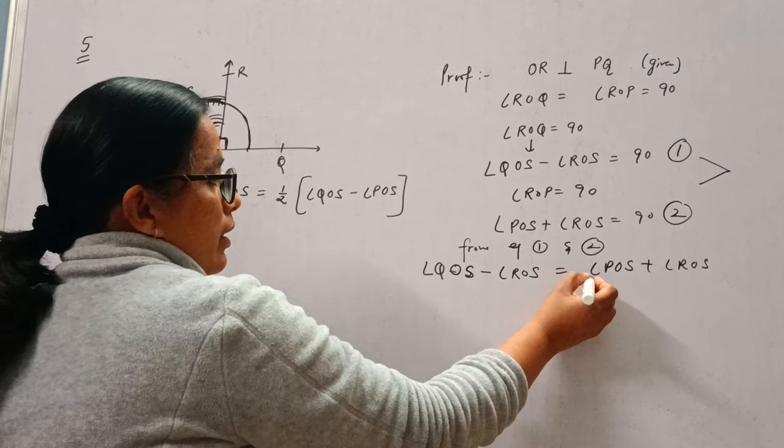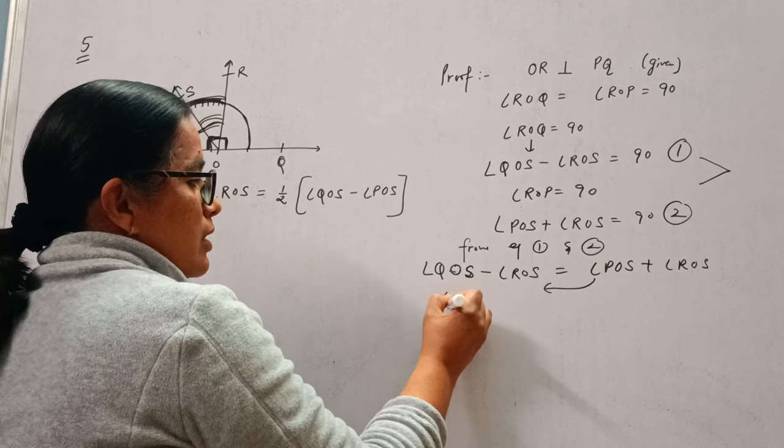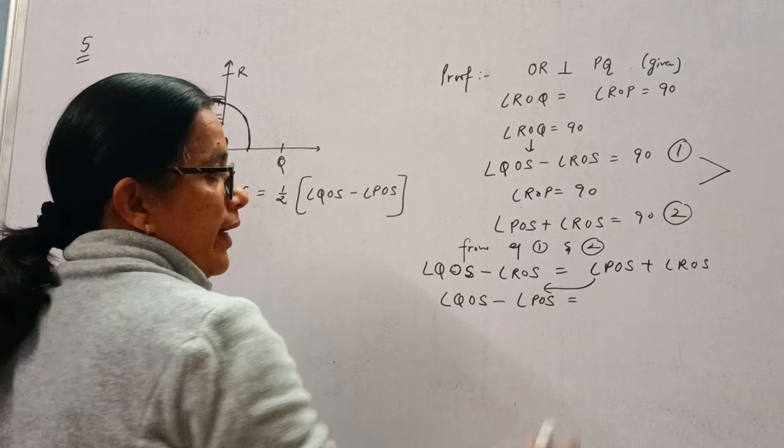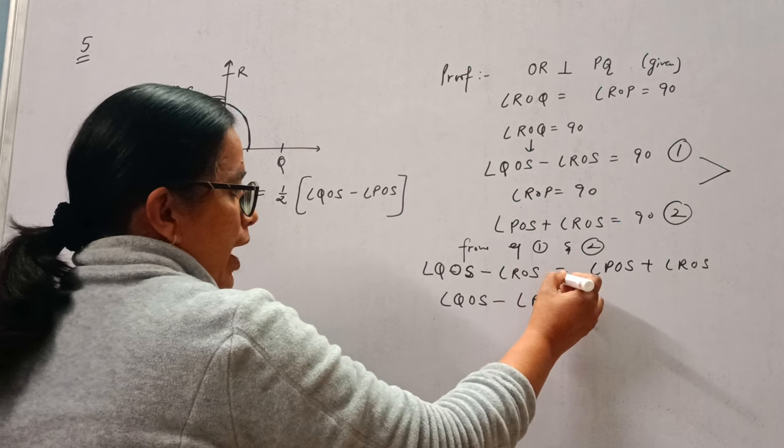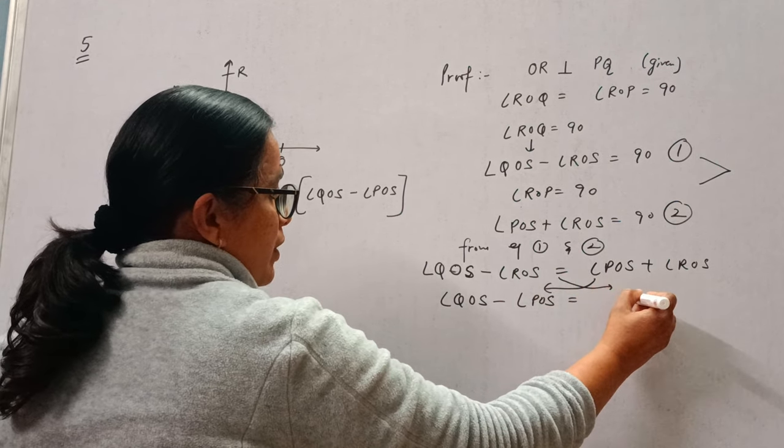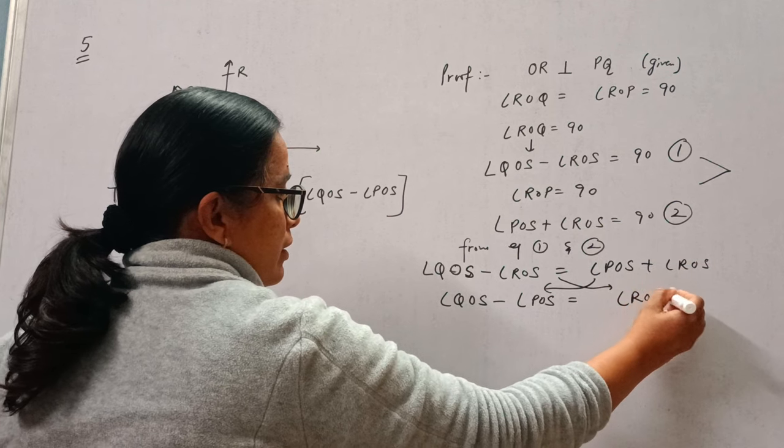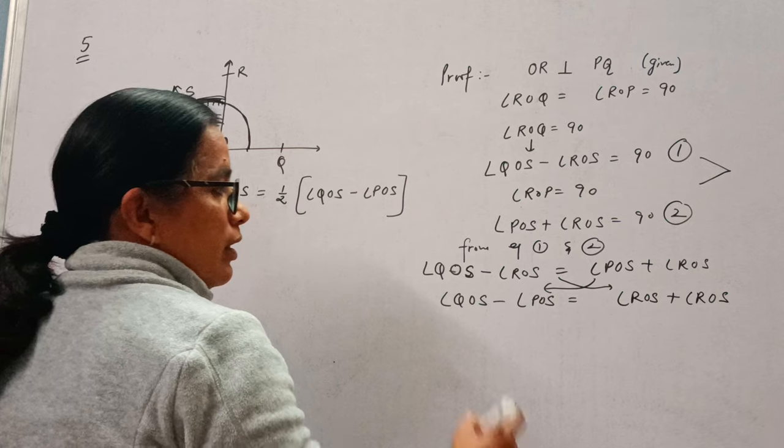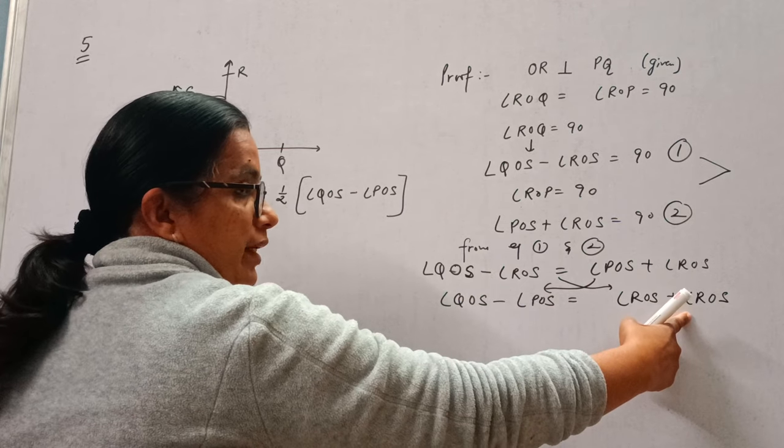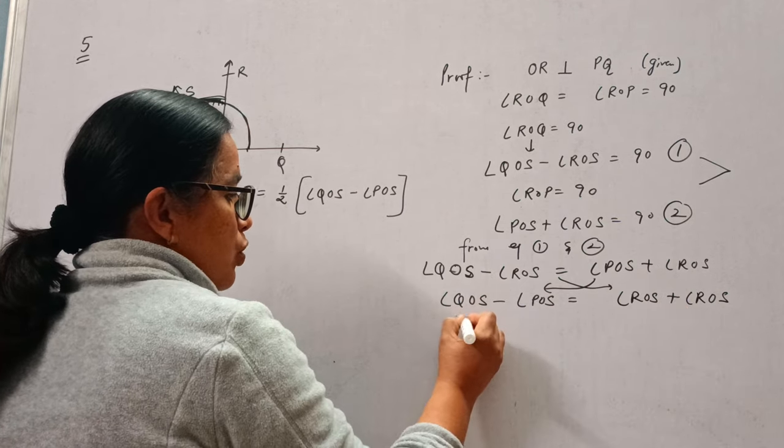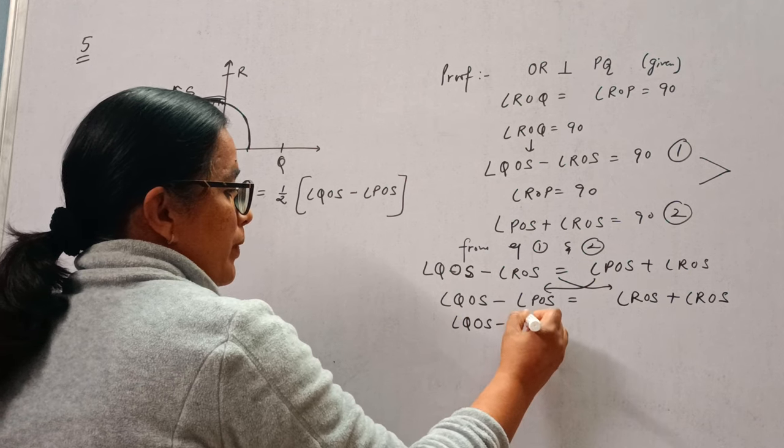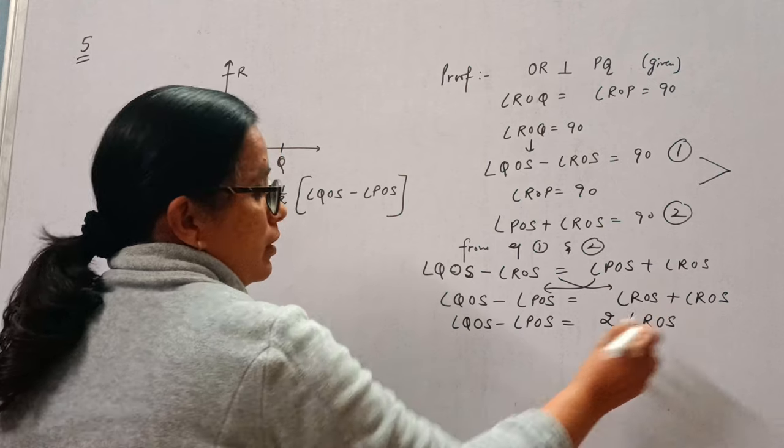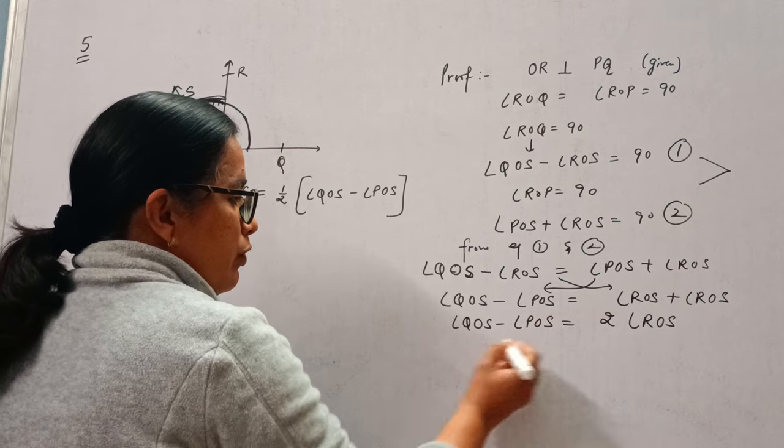Okay. Bring POS on the left hand side, it will become negative. Now bring ROS on the right hand side. One ROS is here, one is this. Okay, this is negative, and on the right side it will become positive. So QOS minus POS will be equal to double of ROS. Okay, now 2 will come here.